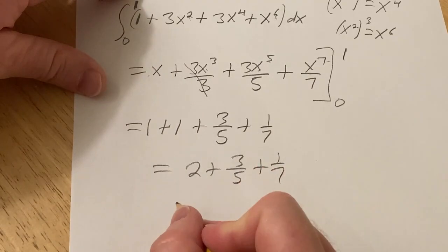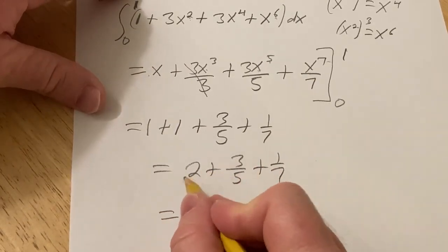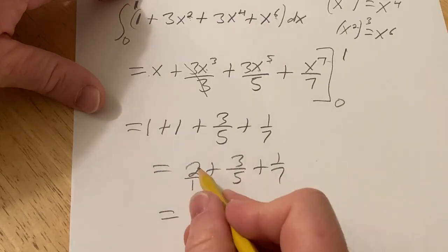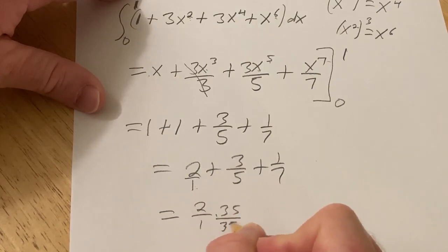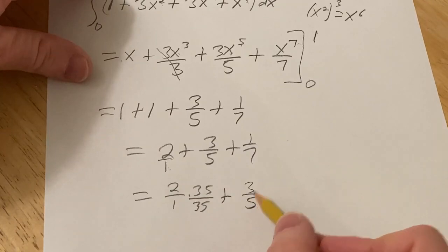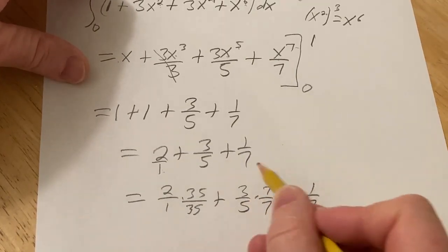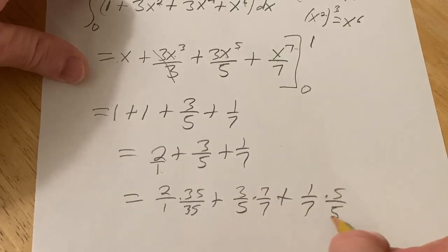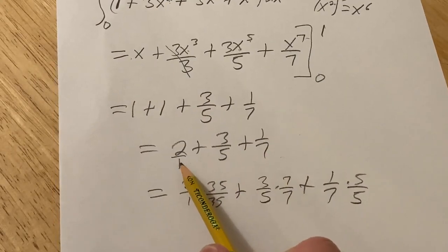So a common denominator here is 35. So basically this is really 2 over 1. So we want this to be a 35 on the bottom. And then 3 fifths. What's missing here to get a 35? A 7. And then what's missing here to get a 35? The 5. So basically you're just trying to make the denominator 35 on each.